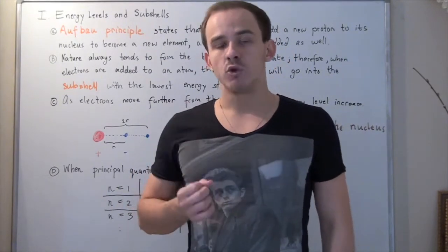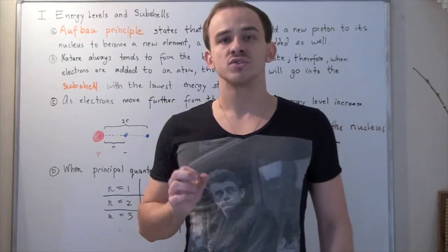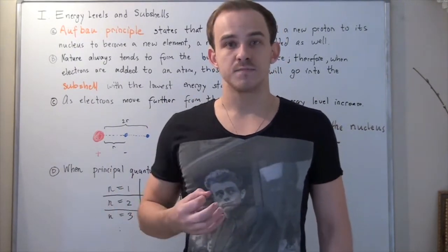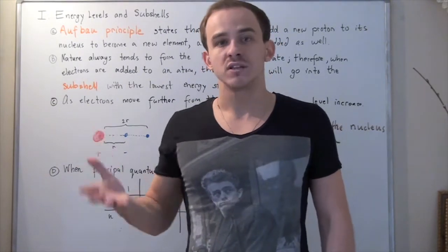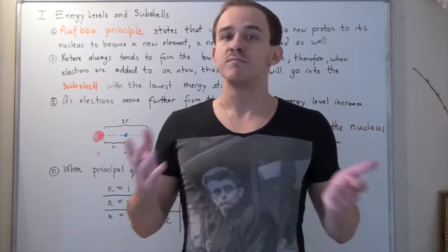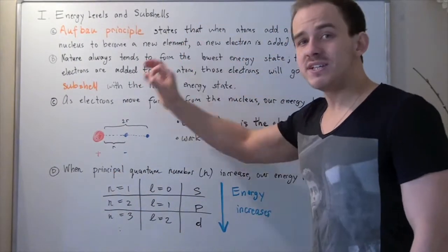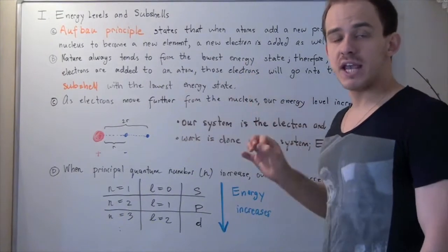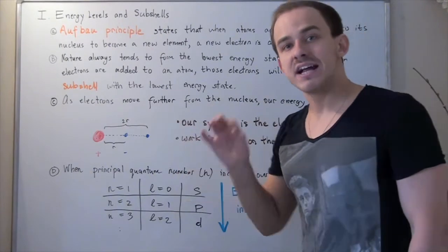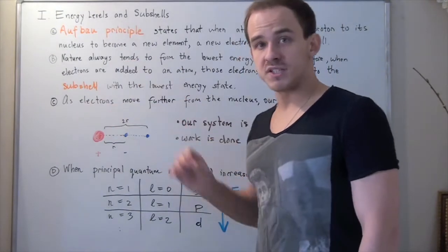So the problem is the following. Whenever we add a proton, we know exactly where that proton goes — into the nucleus along with all the other protons. What about our electrons? We have options as to where to place those electrons because we have many different shells, many different sub-shells, and many different orbitals within our sub-shells. Luckily, nature always tends to form the lowest possible energy state. Therefore, whenever we add electrons to our atom, that electron will go into the lowest possible energy sub-shell.